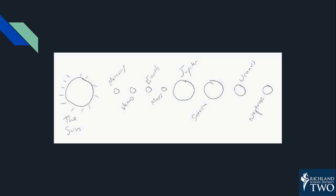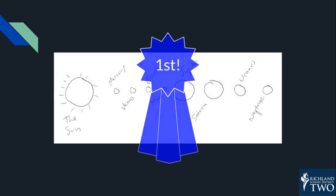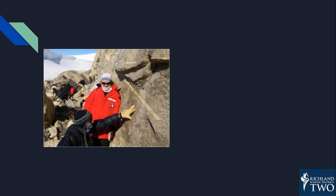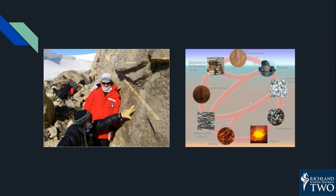Remember though, that models aren't just art projects. Scientists use models to communicate information and test things. After you develop your model, what you do with it is just as important as how you made it. So there you have it — models are an extremely important part of a scientist's work. Once scientists learn about and understand what is going on, they can develop a model to communicate that important information so that others can understand what has been learned.